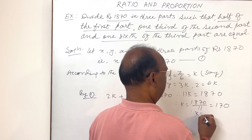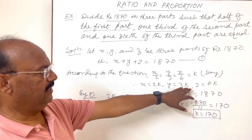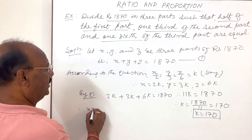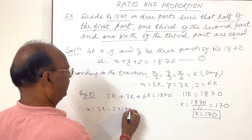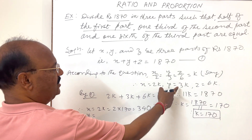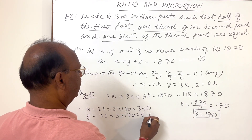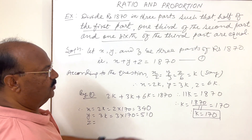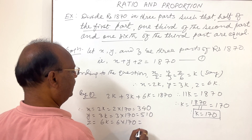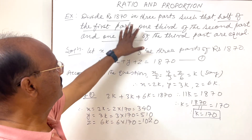Therefore k is equal to 1870 divided by 11, which equals 170. Now we can find the values of x, y, and z. Therefore x is equal to 2k, that is 2 into 170, which equals 340. The second part y equals 3k, that is 3 into 170, which equals 510. And the third part z equals 6k, which is 1020.